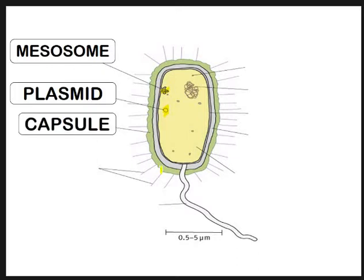Then we've got an outer layer called the capsule - you might have known it as a slime layer at GCSE. The important thing is it's a capsule, not a capsid; when we look at viruses, viral particles have a capsid, whereas bacteria have a capsule. Not all bacteria will have this capsule - it's found where bacteria live in very dry arid conditions, acidic environments, or thermal vents. It is a protective outer layer.